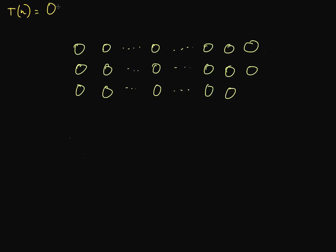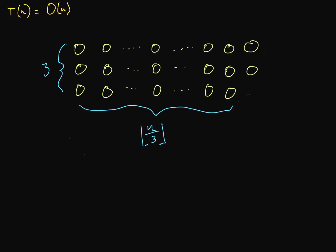Let's look at this visually. In step 1, we divided up our array into groups of 3, and maybe we had some elements left over on the end. That was O(n) time. We have 3 elements per group and n/3 floor groups — that's floored because we don't want to count the leftover elements. So that was step 1.